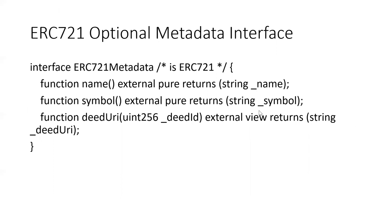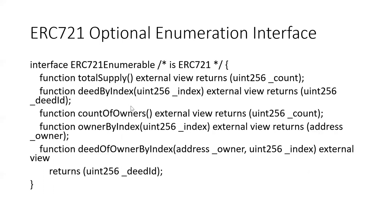There are a couple of optional interfaces to support ERC-721. The first is for metadata: it has a name, symbol, and deed URI. You can use the URI to locate the object if it's not on the blockchain. The second is an enumeration interface to get more information, such as how many owners there are, an index, owner-by-index, and total supply of tokens.